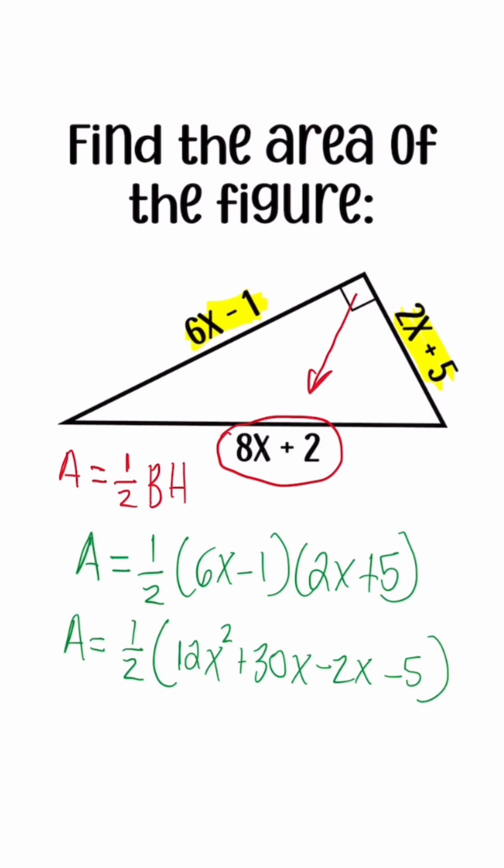Now once I distribute, we're going to just simplify what's inside the parentheses. So we have one half times 12x squared plus 28x minus 5. To finalize this problem, now we're just going to take half of what's inside the parentheses.